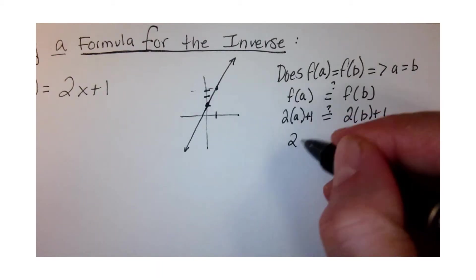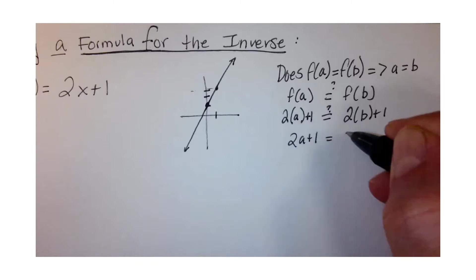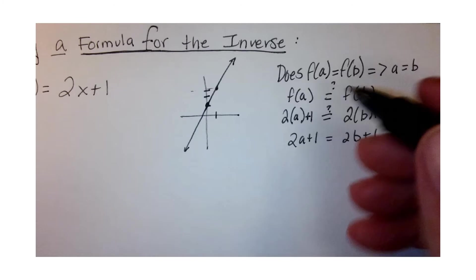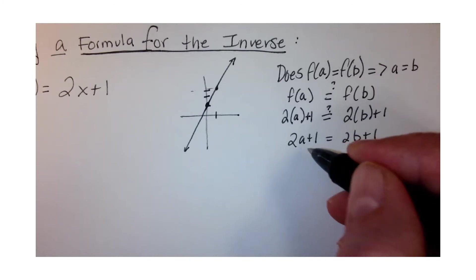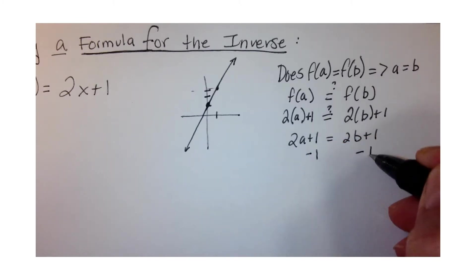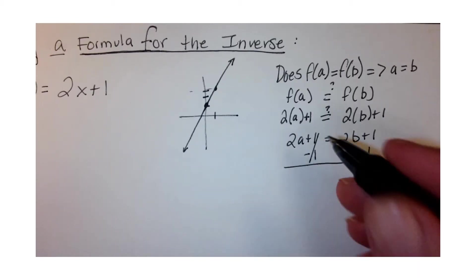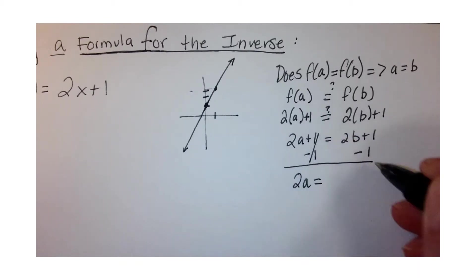2a + 1 equals 2b + 1. We're trying to figure out if a equals b, so let's solve for a here. Minus 1 on both sides—you would work this just like any linear equation—so 2a equals... that's going to cancel...